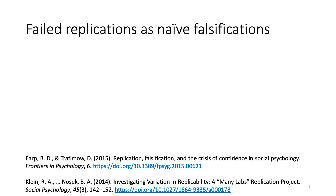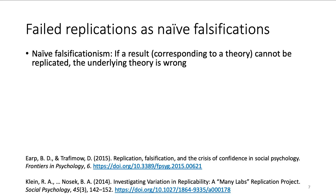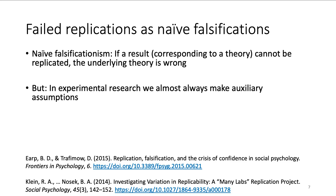As public attention to the replication crisis increased, so did reactions to failed replication attempts of famous studies. A popular interpretation is that if a particular result cannot be replicated, the underlying theory must be wrong. This is, however, usually a too far-fetched interpretation. To test theories and their assumptions, we must make them accessible to experiments. Theoretical constructs must be translated into concrete measures. Besides central assumptions of a theory, this usually requires us to make additional auxiliary assumptions.